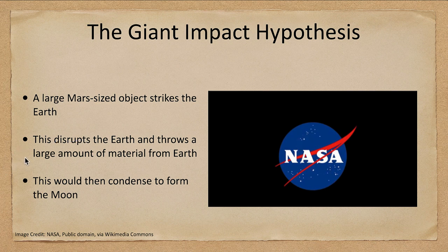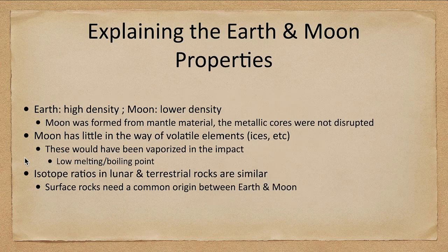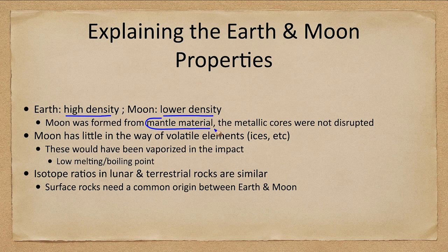What do we see? The Earth has a high density and the moon has a lower density. The moon was formed from mantle material, which gives it a lower density.